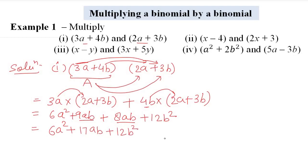Now for the second part: multiply (x - 4)(2x + 3). We write it in product form: (x - 4)(2x + 3). Then distribute: x multiplied by (2x + 3) and -4 multiplied by (2x + 3).